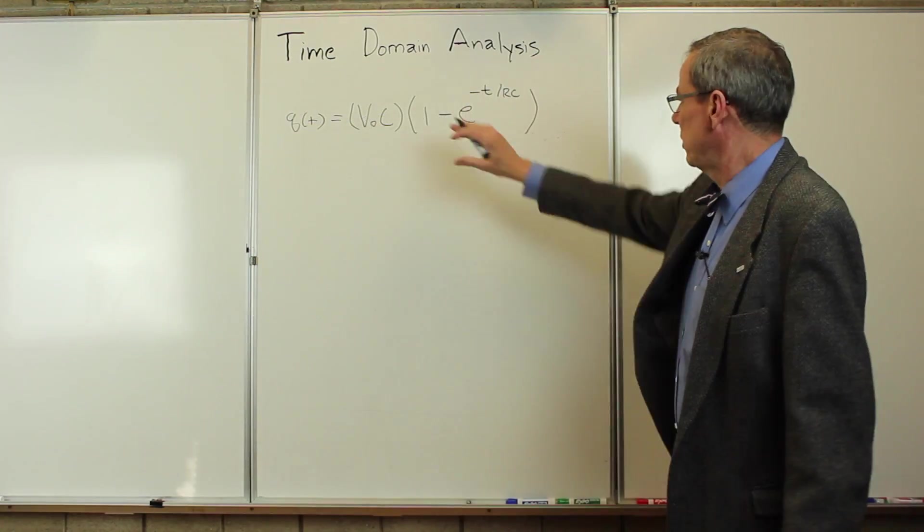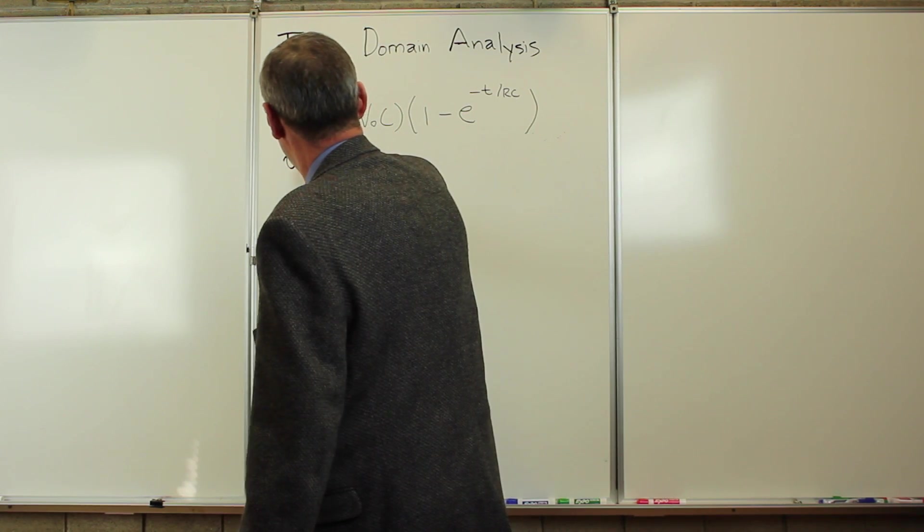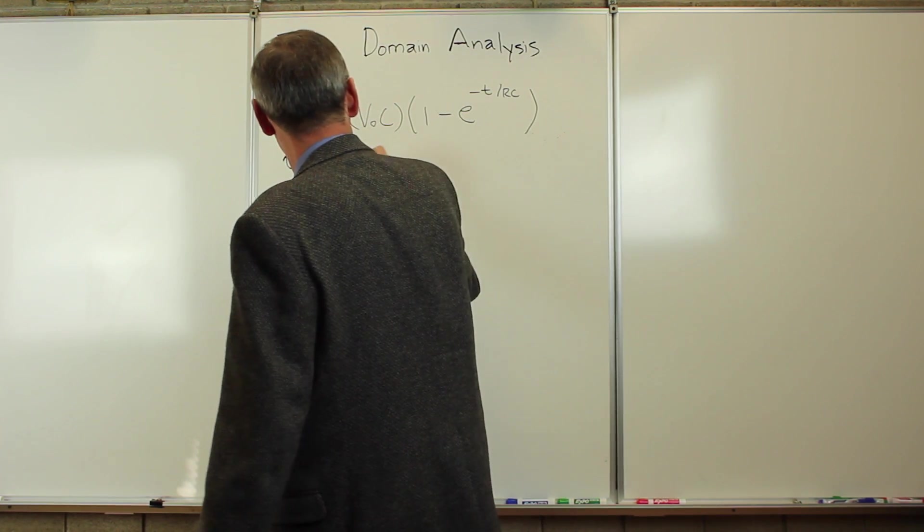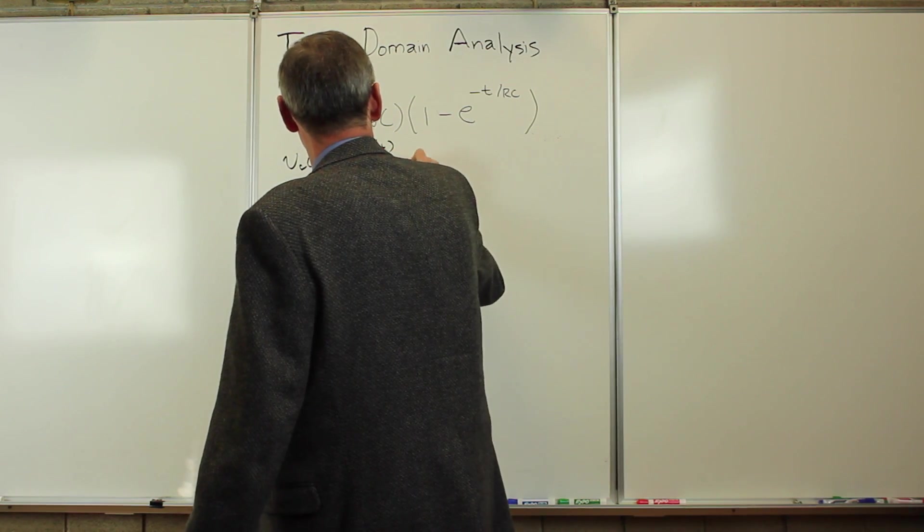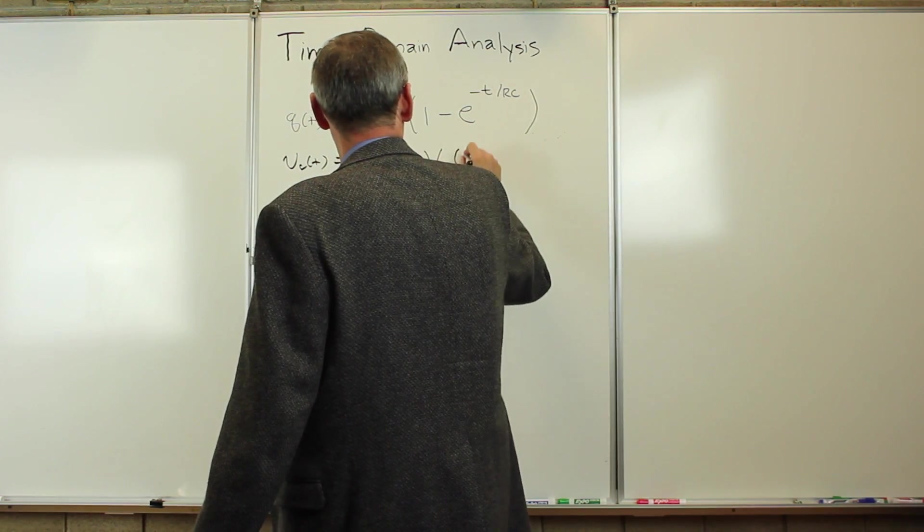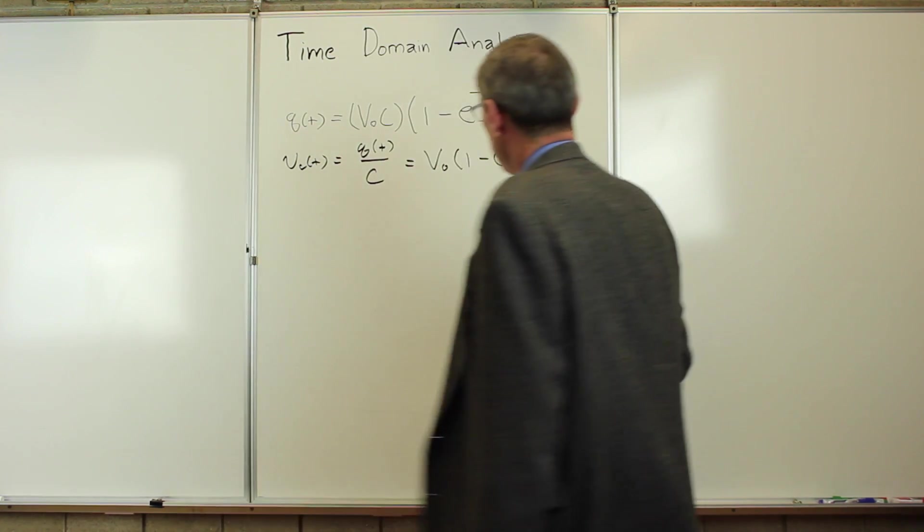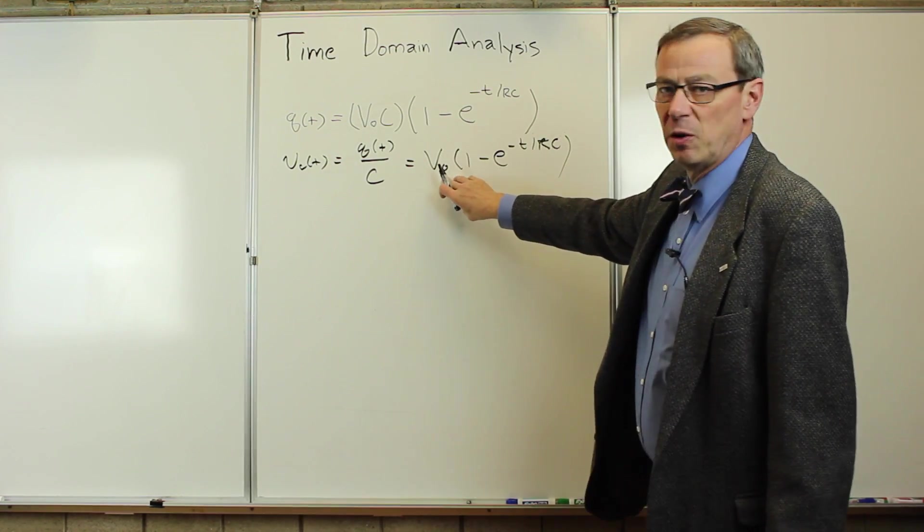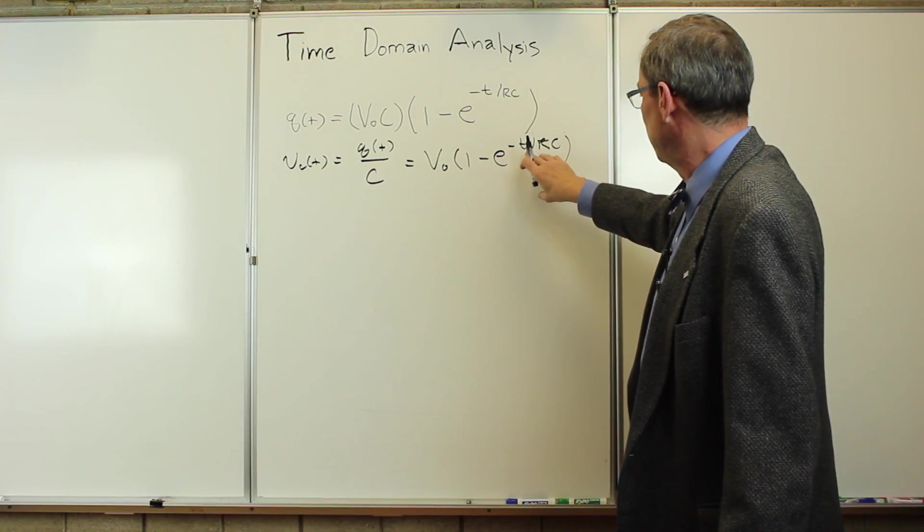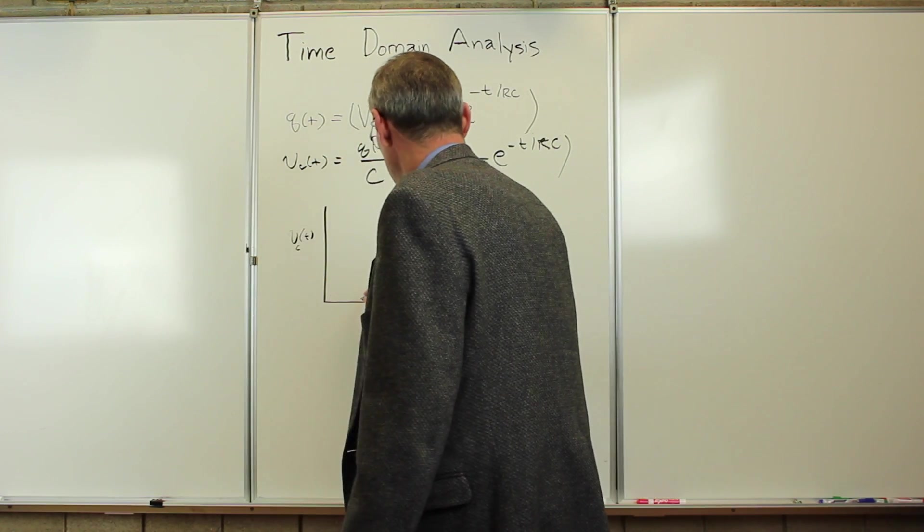So here's the charge. The charge is a function of time. And with that charge, the voltage across the capacitor as a function of time is simply Q of t over C, or is V0 times 1 minus e to the minus t over RC. And what is that doing? It starts out at time t equals zero at the full voltage, and then this lets it decay away.